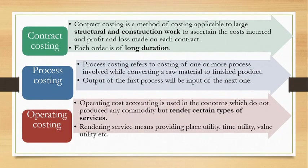Next is contract costing. Contract costing is used for construction work — for example, building construction, bridge construction, or tender projects. The government also gives such contracts, like the Delhi Metro construction project. Contract costing applies to large structures and construction projects. It is long-duration in nature, and a separate individual costing account is maintained for each individual contract.